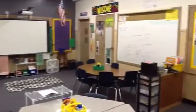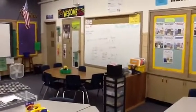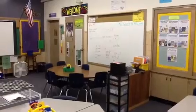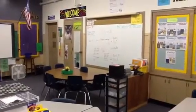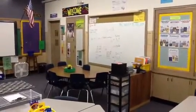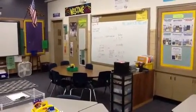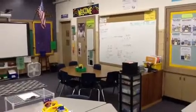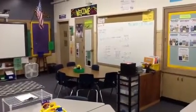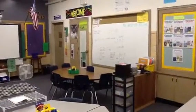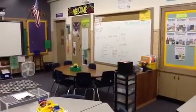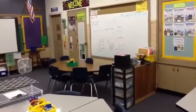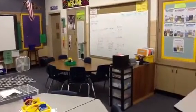As we pan around, we've got the small guided reading group area. This is where I meet with kids based on need or based off of level. We use the STAR reading assessment, so kids at a certain level will all be in this room and then I'll pull groups based off of similar levels or similar needs.